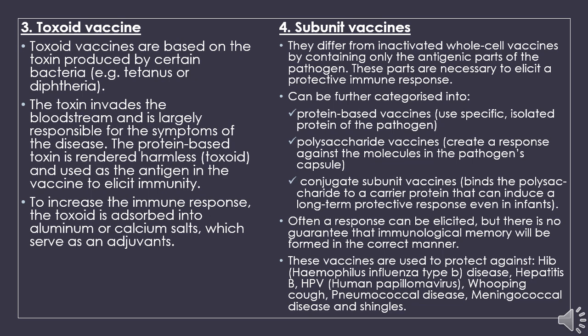Toxoid vaccines are usually administered together with aluminium or calcium salt, which serve as adjuvants to increase the immune response. Lastly is the subunit vaccine — a fragment of a pathogen used to trigger an immune response and stimulate acquired immunity. Subunit vaccines are further categorized into protein-based, polysaccharide-based, and conjugate subunit vaccines. The immune response will be elicited, but there is no guarantee that immunological memory will be formed correctly.